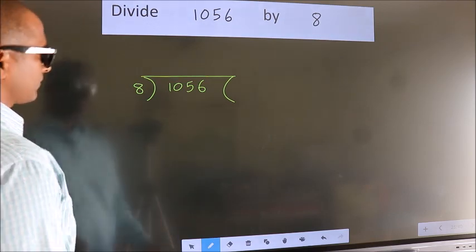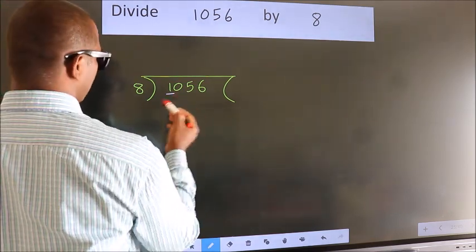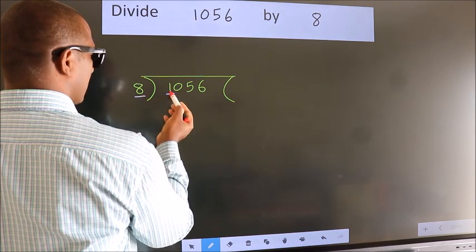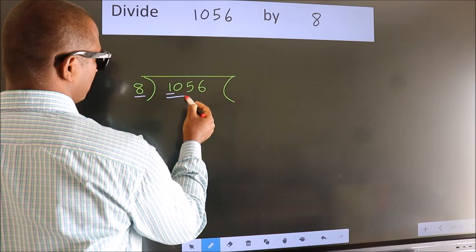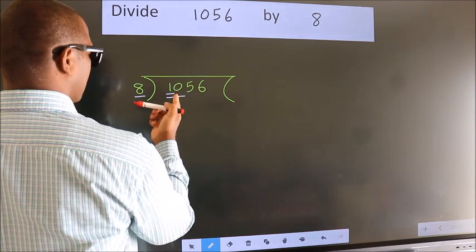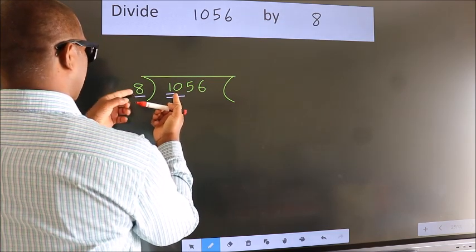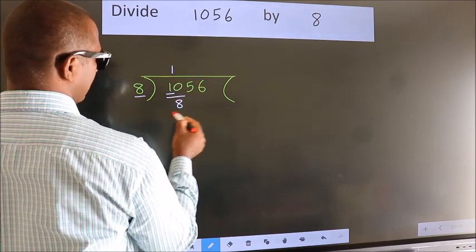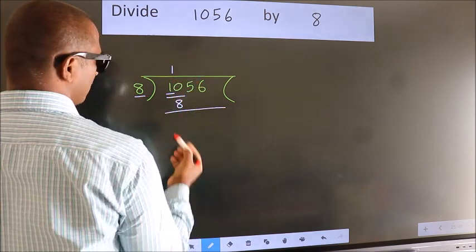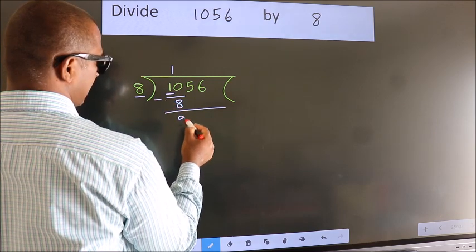Next, here we have 1, here 8. 1 is smaller than 8, so we should take 2 numbers: 10. A number close to 10 in the 8 table is 8 once, which is 8. Now we should subtract, and we get 2.